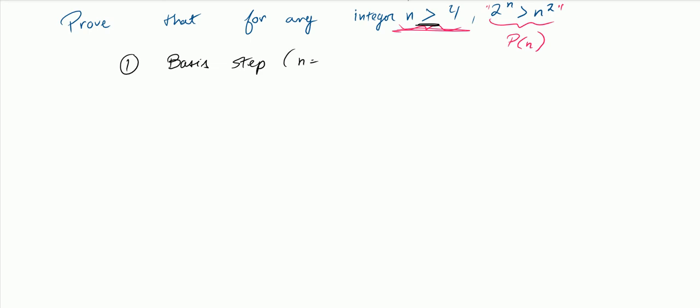So I'm going to use n equal 5. Basically what I want to check is that P(5) is true.